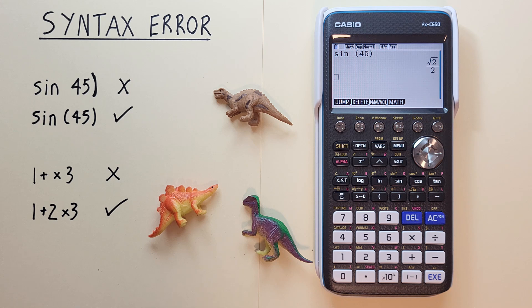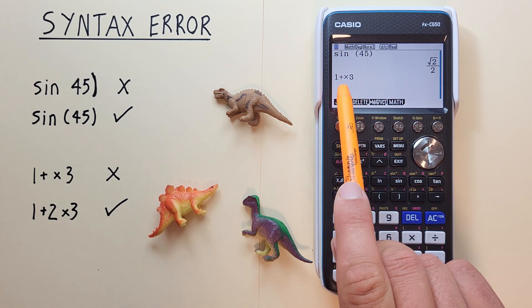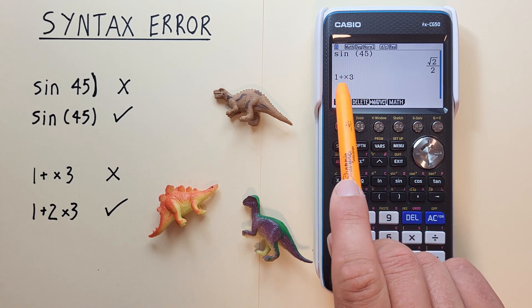Another example, let's say we enter something like this: 1 plus times 3. So we have the plus and the times right beside each other with nothing in between them.